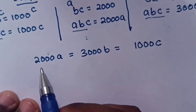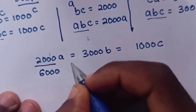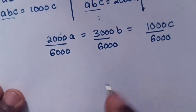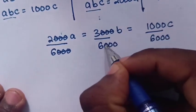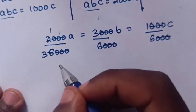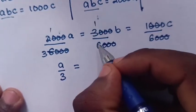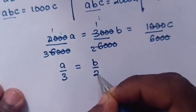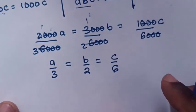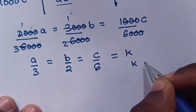To simplify, we divide by 6000 on all sides. Canceling the zeros: 2000/6000 gives 1/3, 3000/6000 gives 1/2, and 1000/6000 gives 1/6. So we get A/3 equals B/2 equals C/6, and we set this all equal to K, where K is a constant.